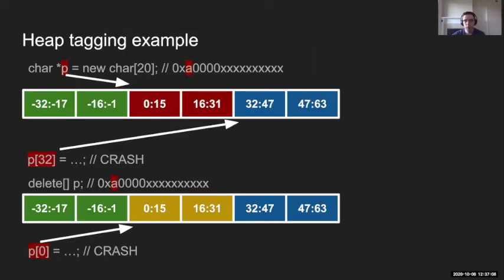This is an example of how this extension can be used to protect heap memory from corruption. Tags are color coded — for example, red stands for the 0xA tag. If a pointer is used for an out-of-bounds access, such as p[32] in this case, the pointer tag will not match the memory allocation tag and the process will crash. When memory is deallocated, memory tags are changed again randomly, and an attempt to use a dangling pointer will also result in a crash and a crash report.